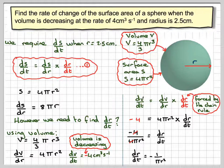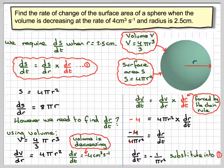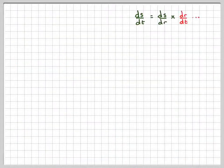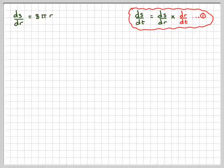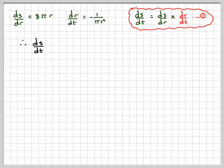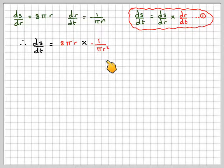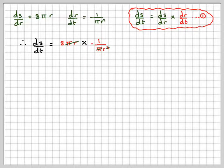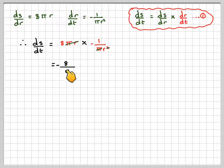So we can now substitute into equation 1 to find the rate of change of the surface area. We have ds/dt equals 8π r times minus 1 over π r². The π r cancels out and we're just left with 8, giving us the result ds/dt equals minus 8 over r. This is a differential equation.